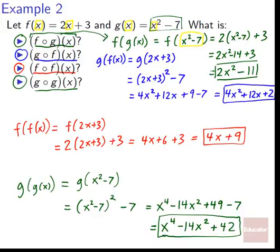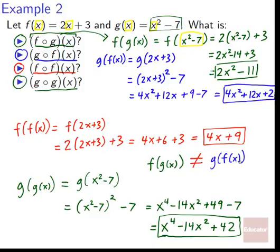One other thing to point out: notice that in general, f of g of x is not equal to g of f of x — they're normally very different. Flipping the order of function composition gives very different results. For the most part, f composed with g is a totally different function than g composed with f. This is just something to keep in mind: composition order matters very much.